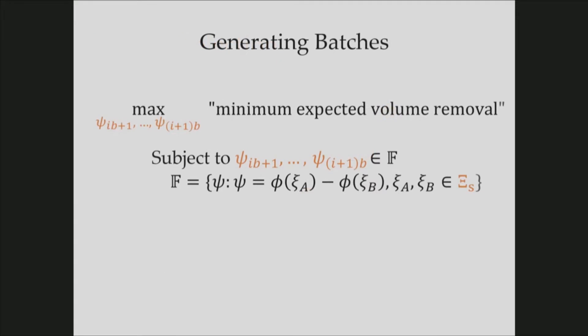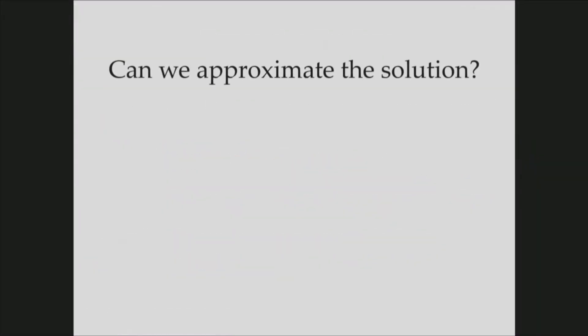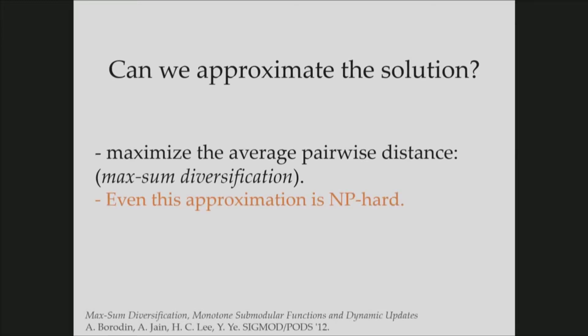And because they are very similar, there will be a lot of redundant information. So we need to increase the dissimilarity between the hyperplanes. And if we think about the optimization, we can note that what we are trying to do is maximize the information gain from the whole batch. And in that sense, it's similar to joint entropy maximization problem. But this problem requires an intractable exhaustive search. So can we approximate the solution? One heuristic to approximate is to maximize the average pairwise distance between the hyperplanes. In this way, we can get a more diversified batch. And this is exactly the maximum diversification problem. But even this approximation is NP-hard.